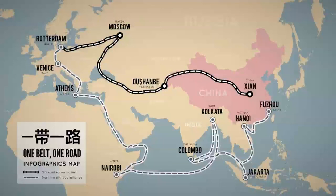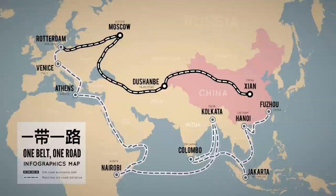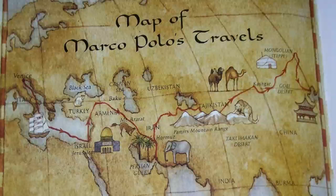This is called One Belt, One Road — it's modern, not ancient. To some extent it approximates the ancient Silk Road. Can you see places the ancient Silk Road did not reach? Rotterdam in Holland, Moscow, and Nairobi. I agree about Moscow and Rotterdam. Now we've got Marco Polo maps here.